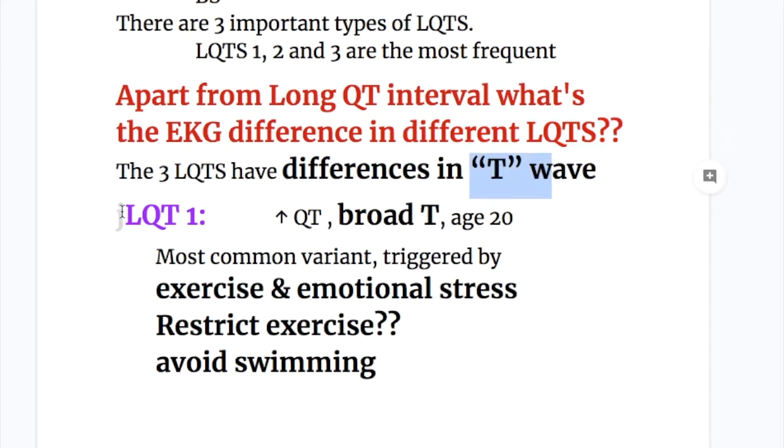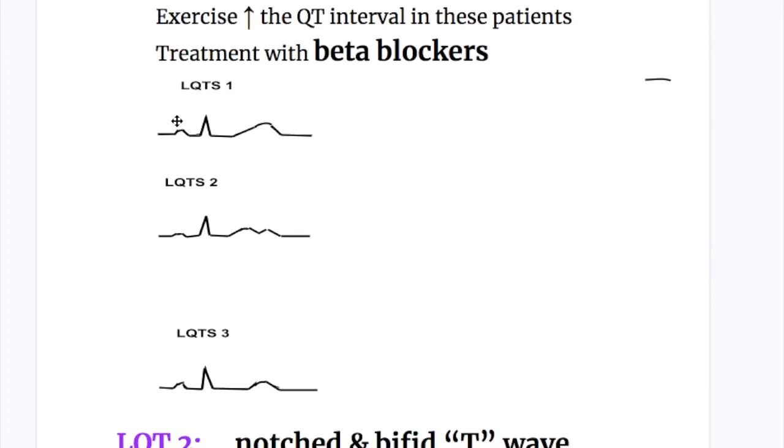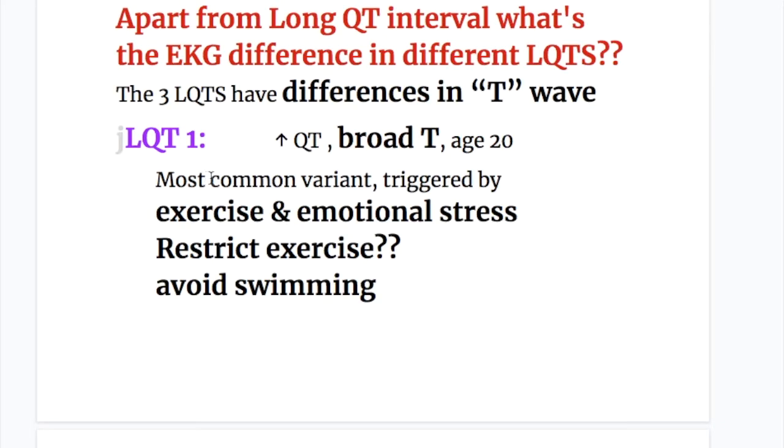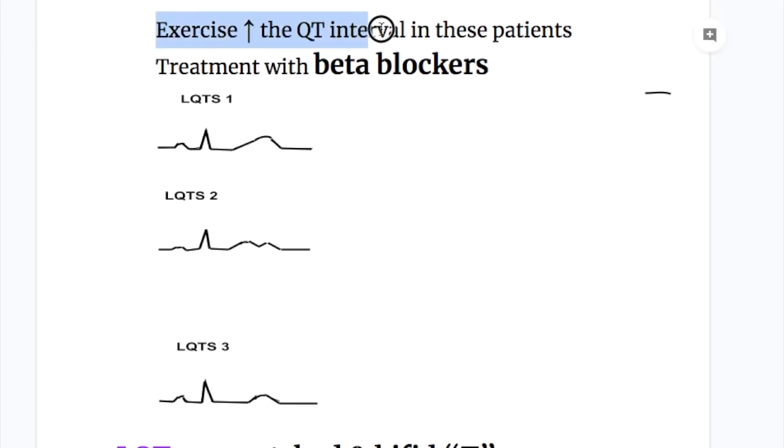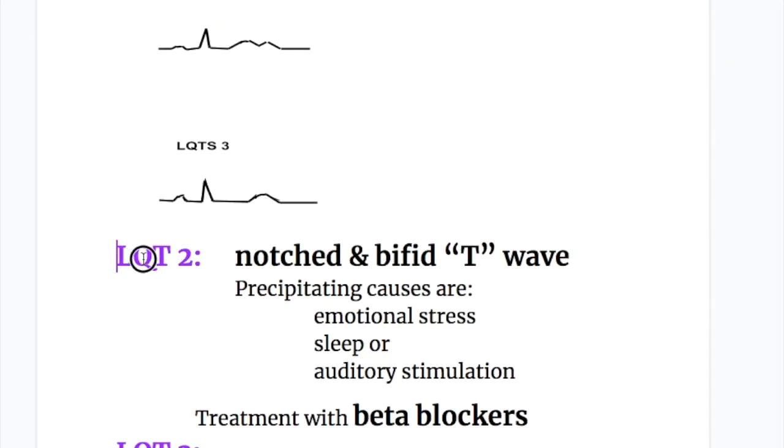Let's discuss LQT 1: increased QT interval and there is a broad T wave. This is the LQT 1 with a broad T wave, increased QT interval and a broad T wave. This is the most common variant and is triggered by exercise and emotional stress. So LQT 1 is triggered by exercise and emotional stress. Restrict exercise in LQT 1 and avoid swimming. Why restrict exercise in LQT 1? Because exercise increases the QT interval in these patients. And the treatment is with beta blockers.